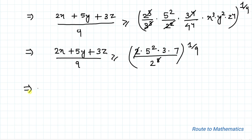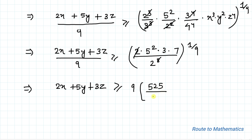Therefore, 2x + 5y + 3z is greater than or equal to 9 × (525 / 2⁷)^(1/9). Hence the inequality is proved. I hope you have understood the solution. Thanks for watching — please subscribe to my channel and hit the like button for more such interesting videos. Thank you.